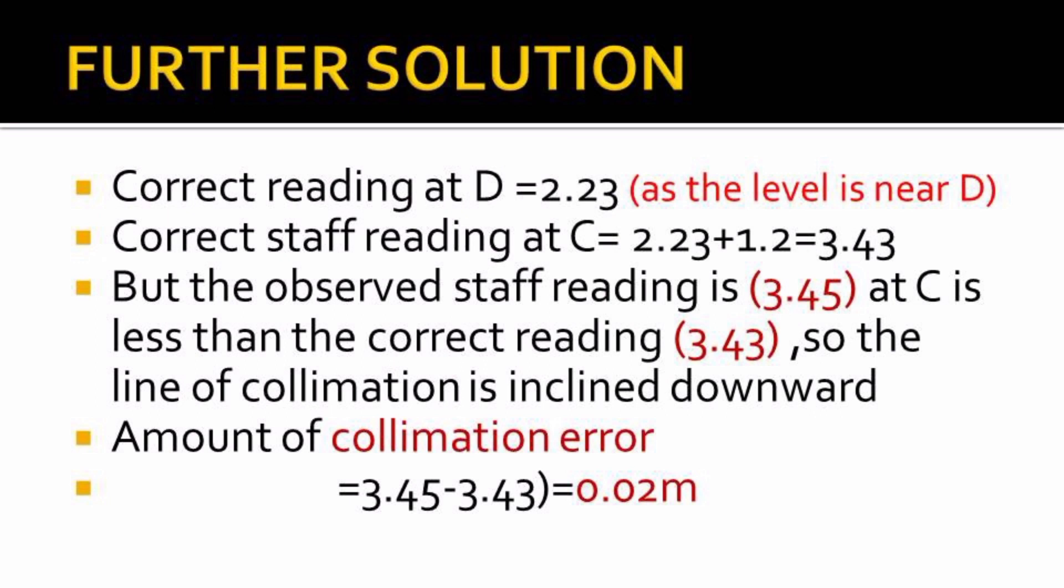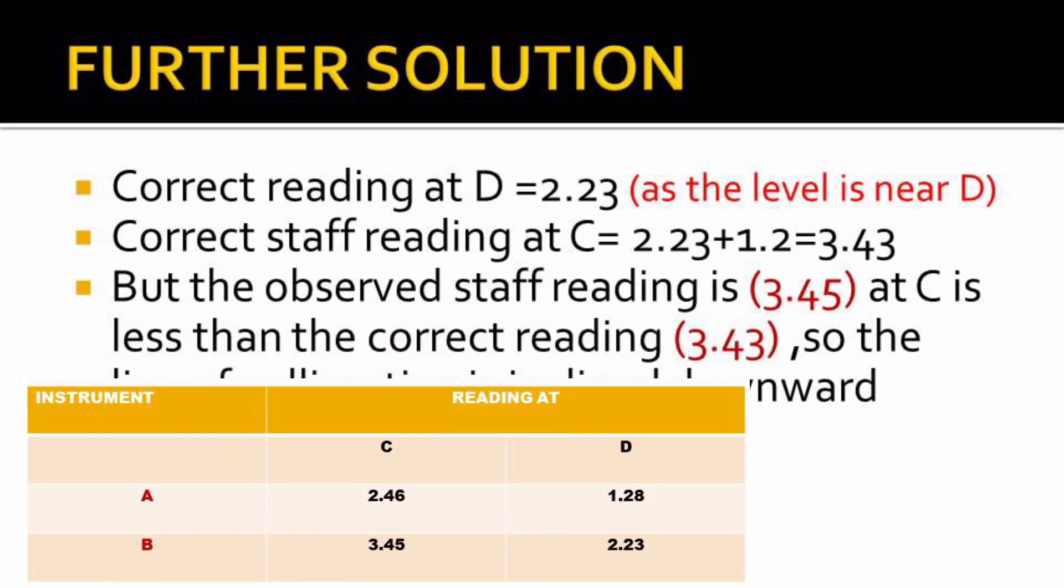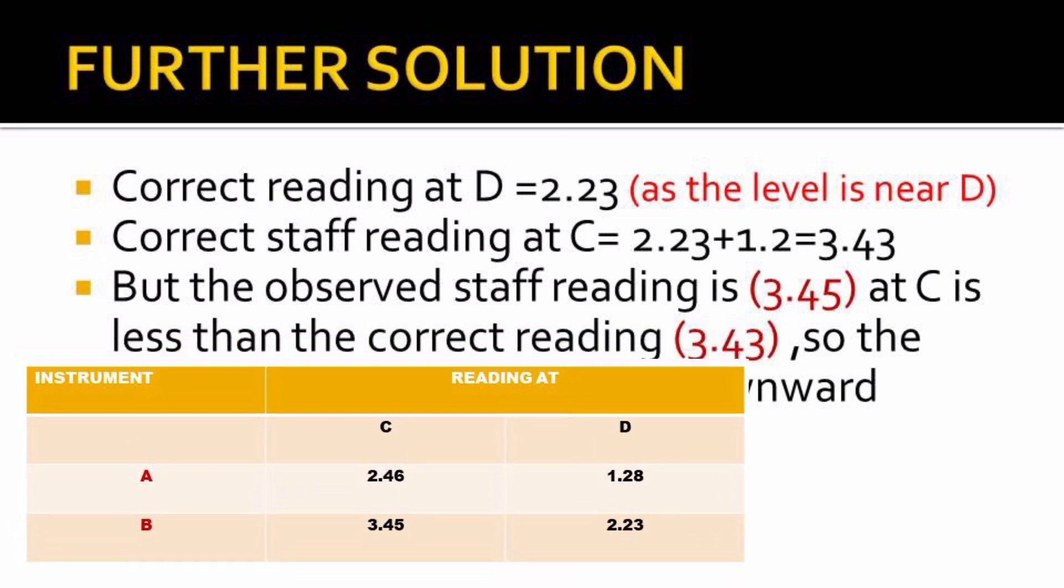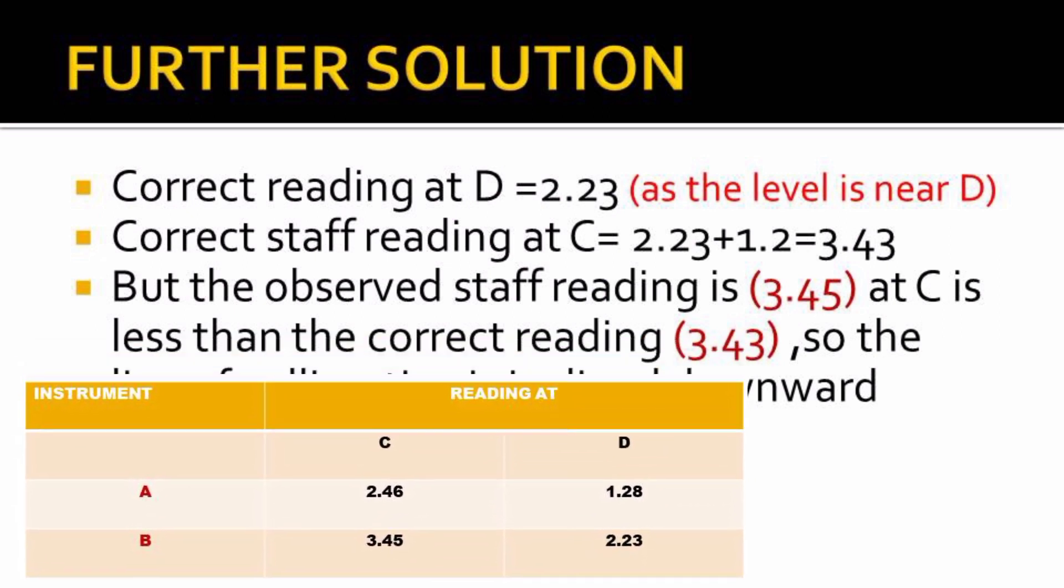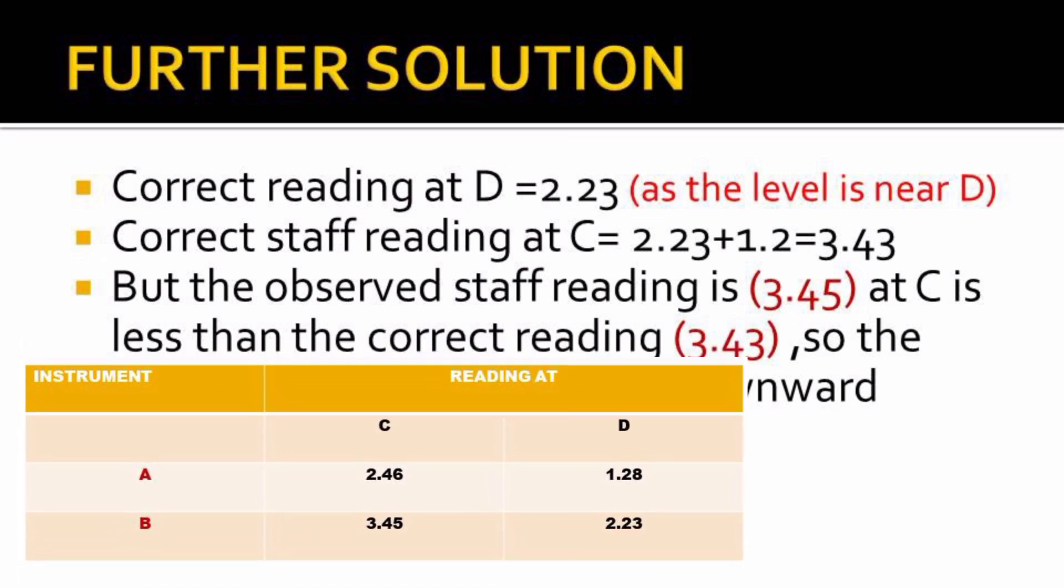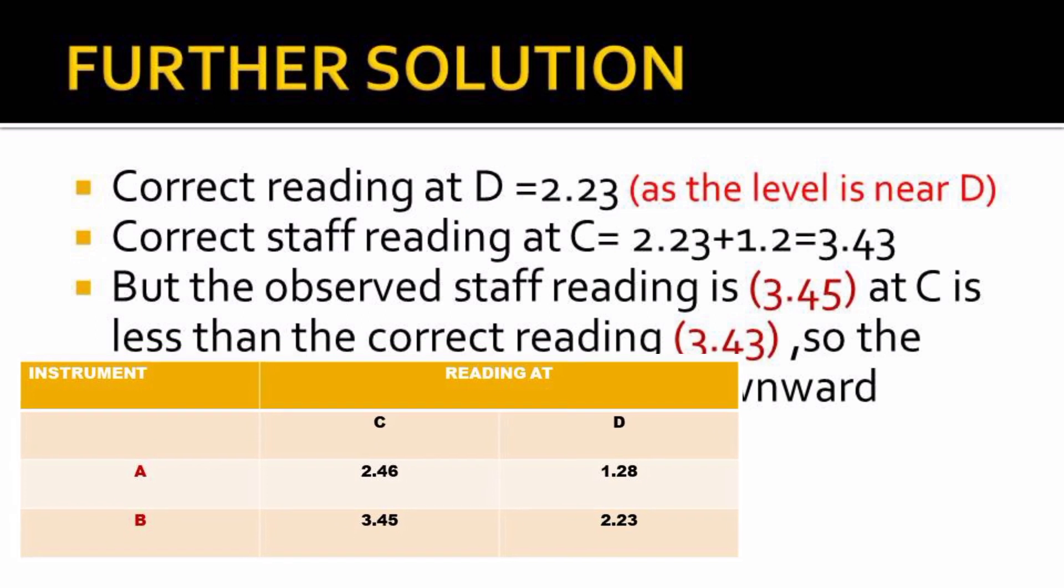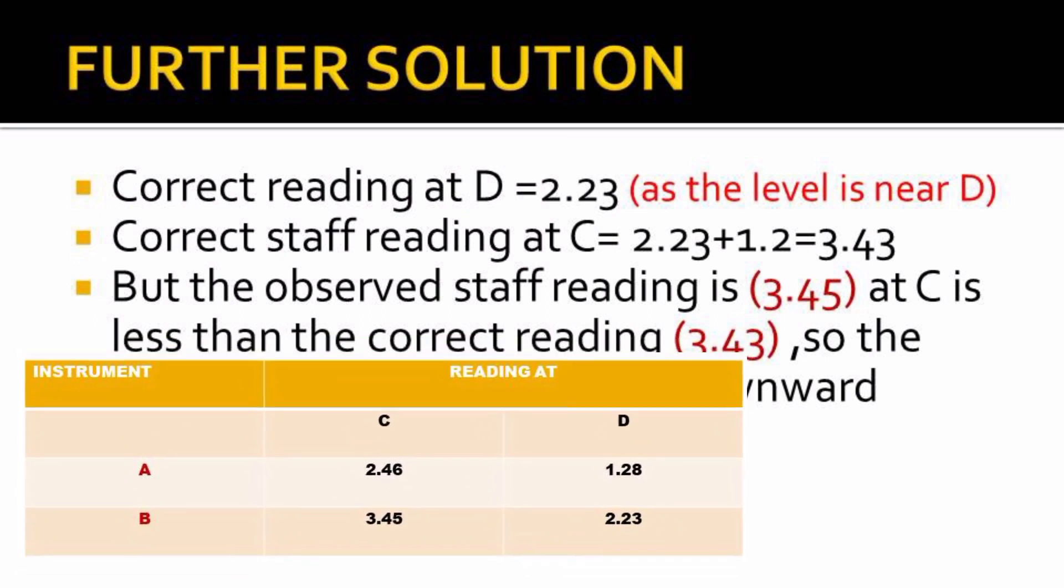This question is 12 marks - that was a lot of marks for such a simple thing. But we can go further; they may ask you later maybe in another series, so I've done a further solution. The correct reading at D will be when the instrument was placed at B observing C and D. Either way, when you use A it provides the same answer. The correct reading at D equals 2.23, as you can see there, because the level was near D.